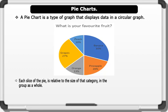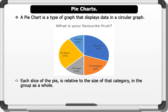In other words, each slice of the pie is relative to the size of that category in the group as a whole. The entire pie represents 100% of the whole, while the pie slices represent portions of the whole. That's brilliant.